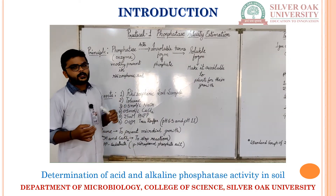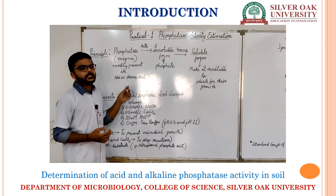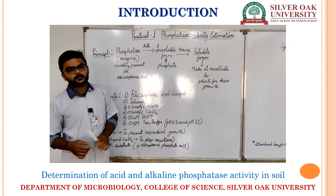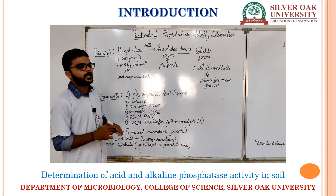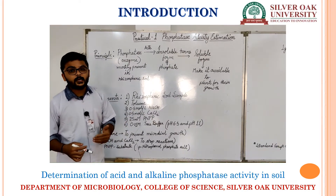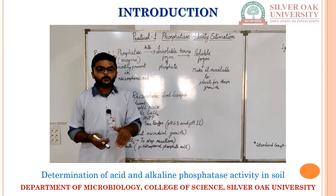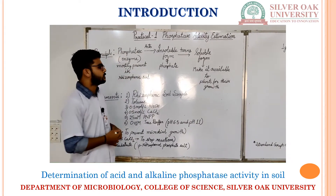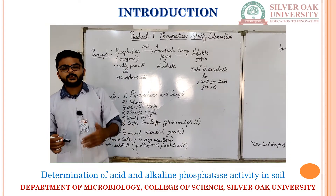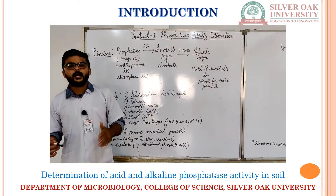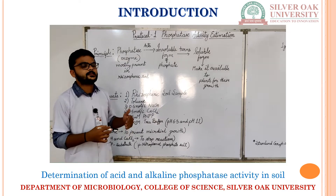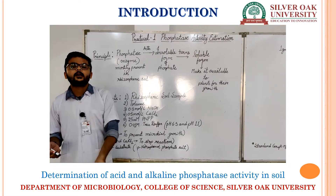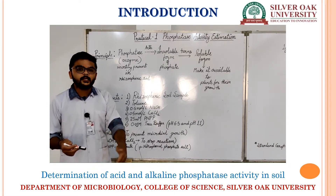For our experiment, we will be taking soil sample from specifically the rhizospheric area of a plant. In order to do that, we have to take soil sample from approximately 6 to 7 cm deep soil. You can take soil from any area — you just have to dig a hole of around 4 to 7 cm and then take the soil.